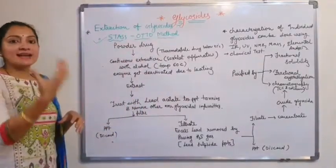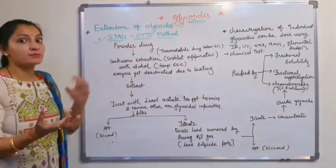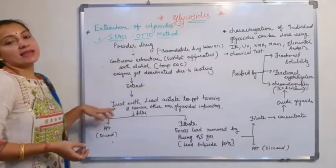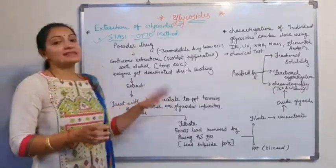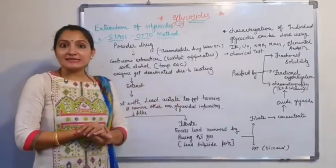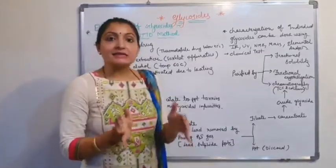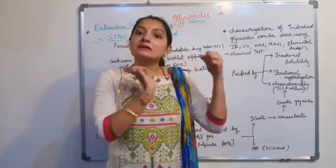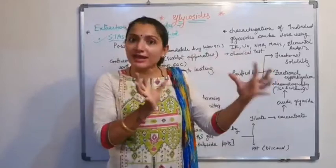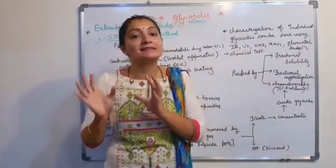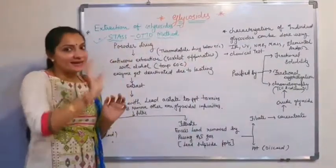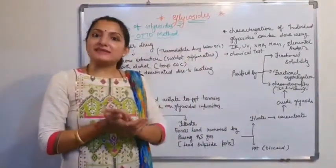After extraction, we take the filtrate. In this extract, we add lead acetate. We add lead acetate because in its presence, tannin is precipitated out. This is an identification test of tannin. When we add lead acetate to the extract, the tannin precipitates out.